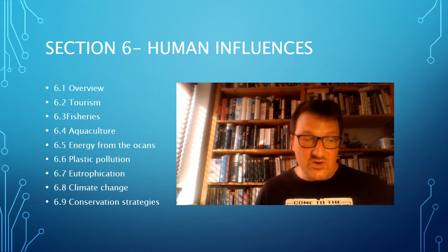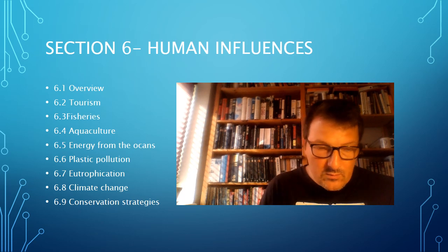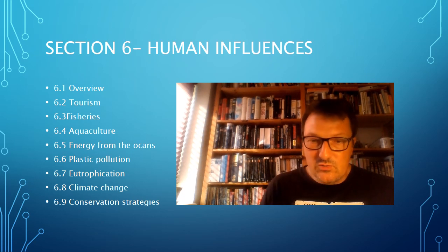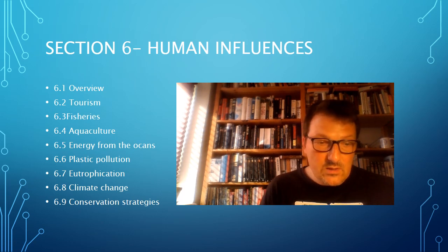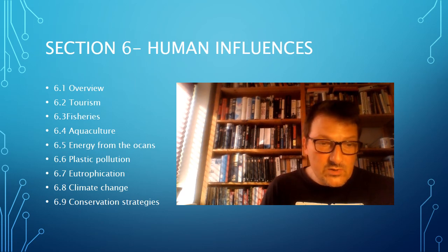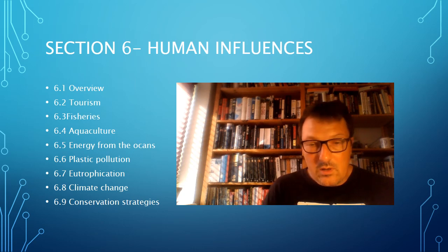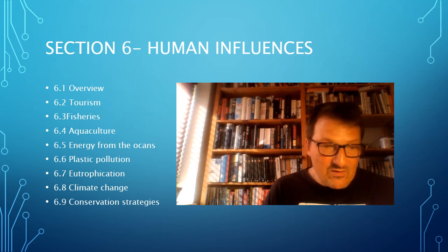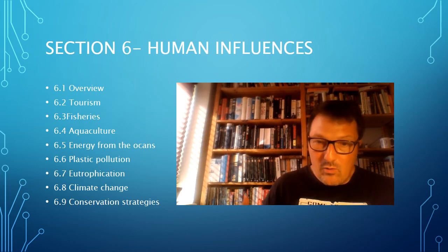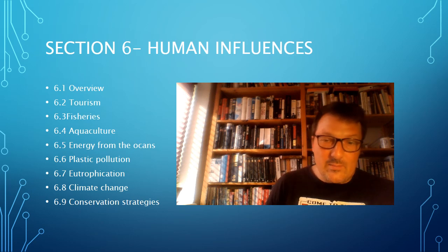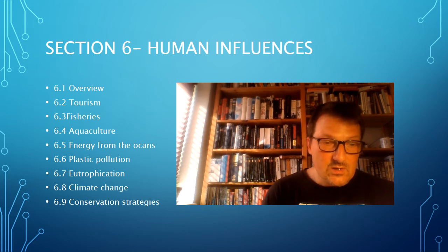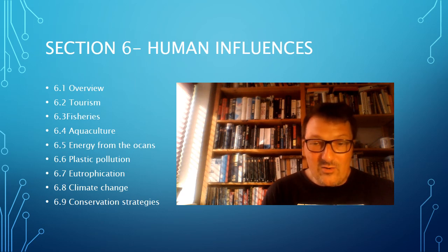6.1 is an overview of human interactions. 6.2 looks into how tourism impacts the ocean, socio-economic factors, and how to look at doing sustainable tourism. 6.3 looks at fishing — how fishing is quite important — looking at different fishing methods and how to navigate fishing ships, but also how overfishing can damage populations and fishing stocks, and outlining and evaluating more sustainable fishing strategies.